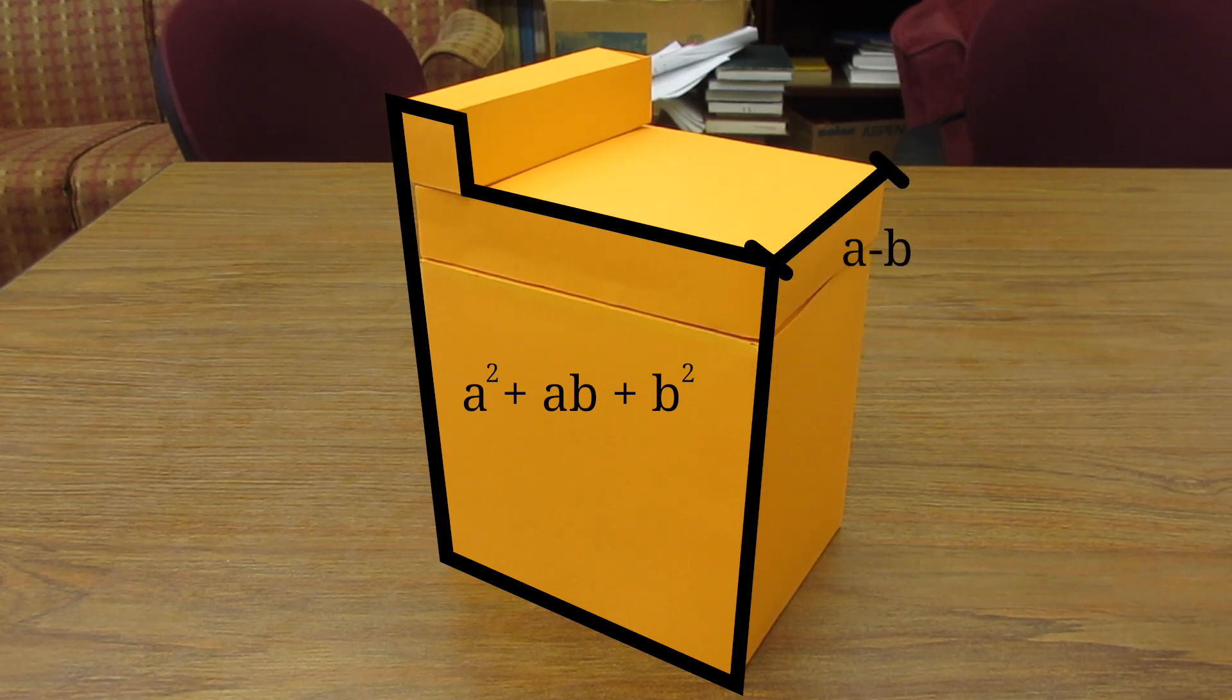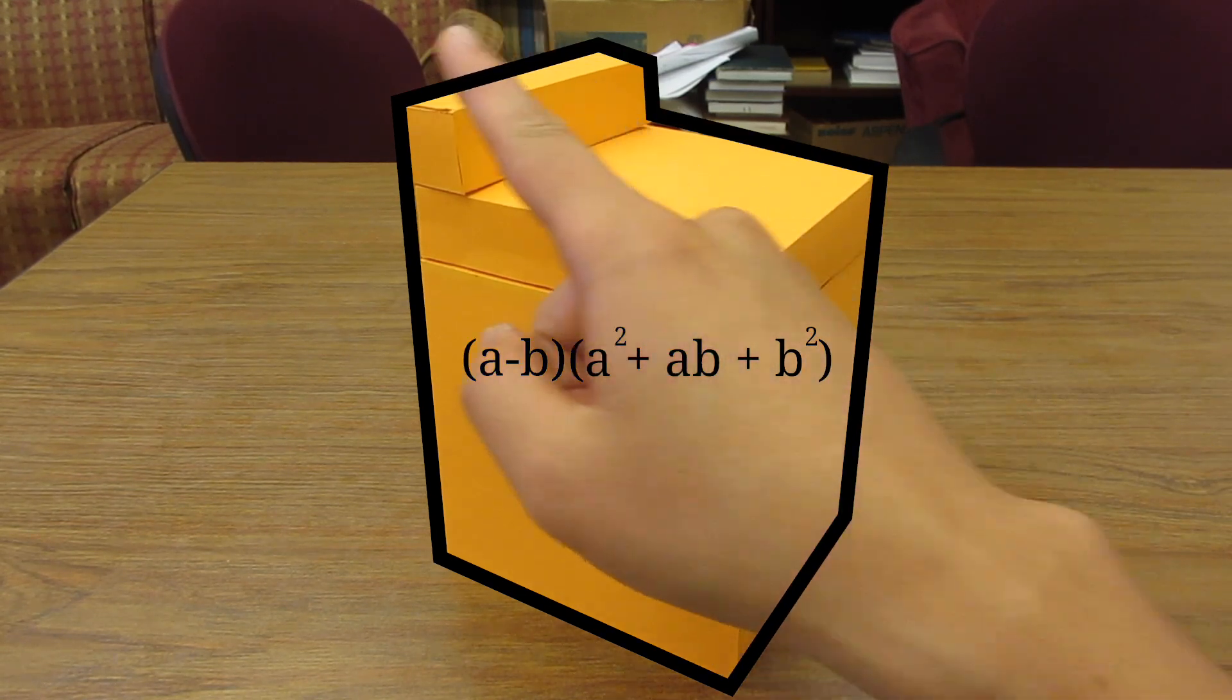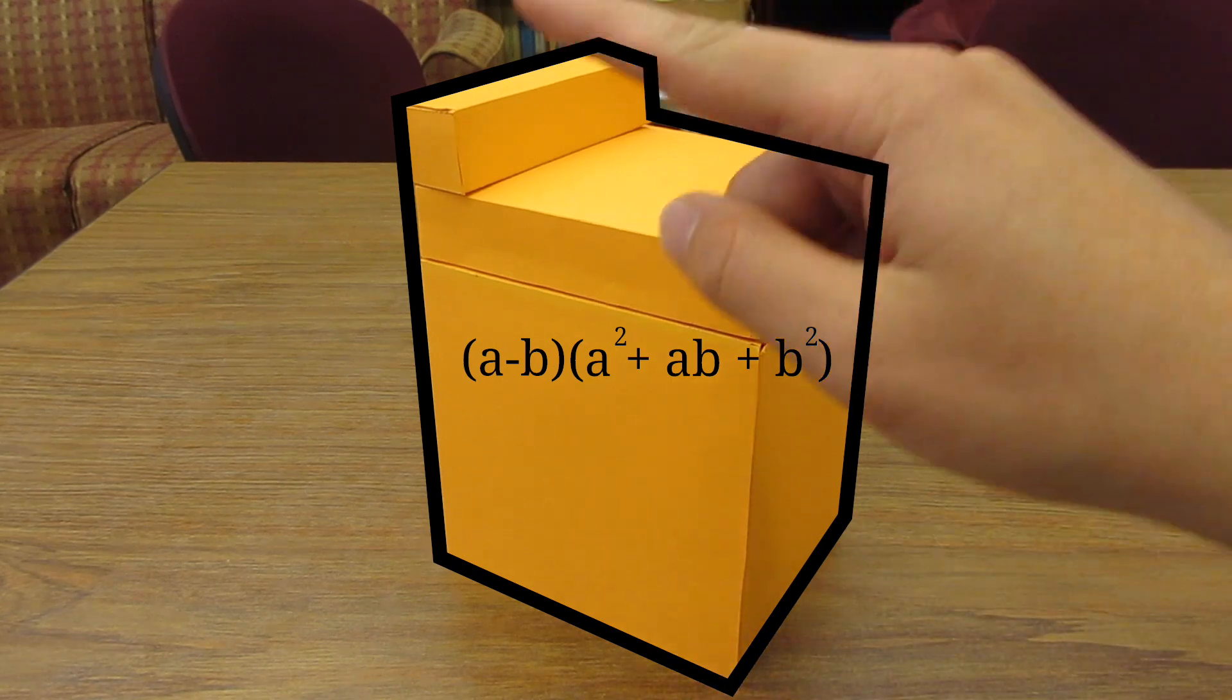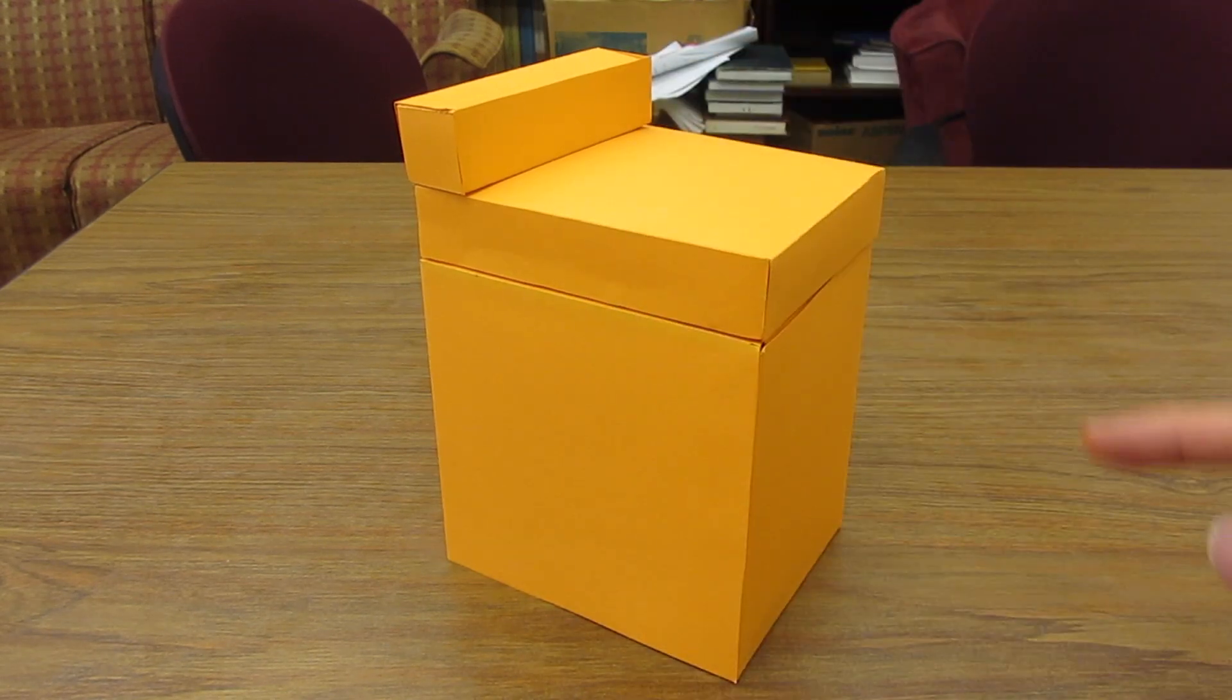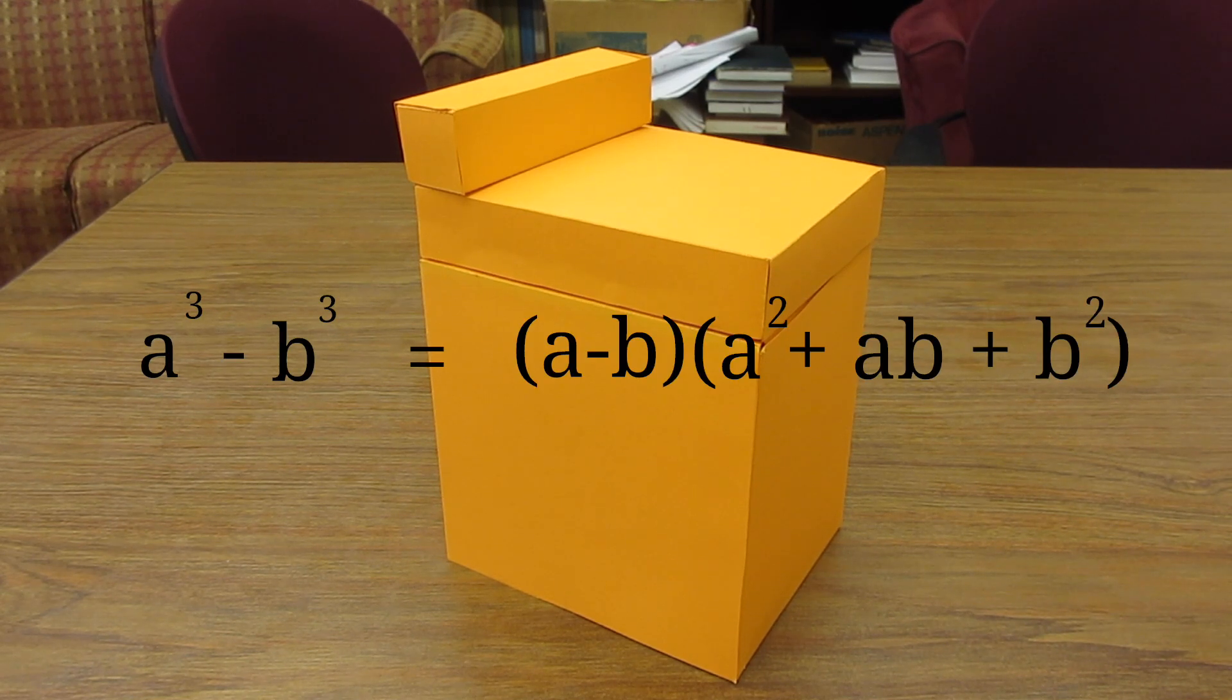So we have the formula for the solid being (a - b) times (a² + ab + b²). But remember the volume of this thing is a³ - b³. So we conclude that a³ - b³ is (a - b) times (a² + ab + b²).